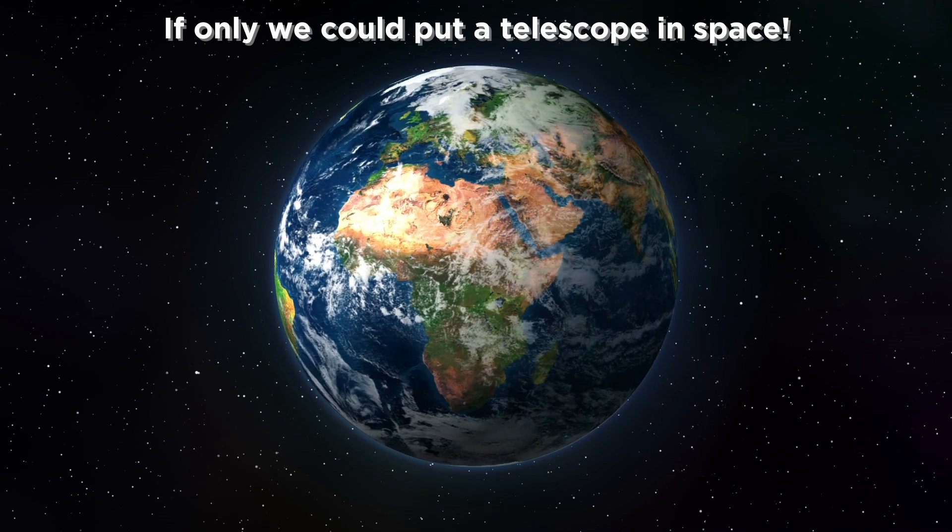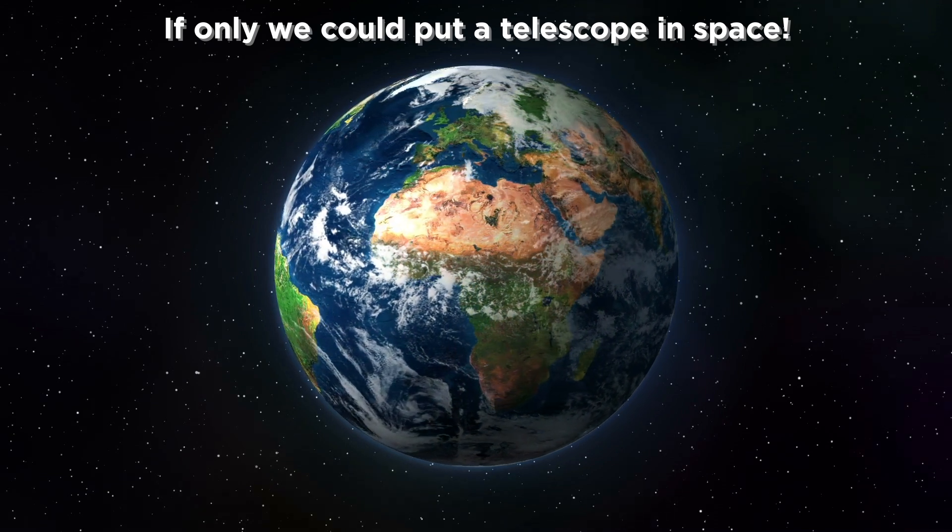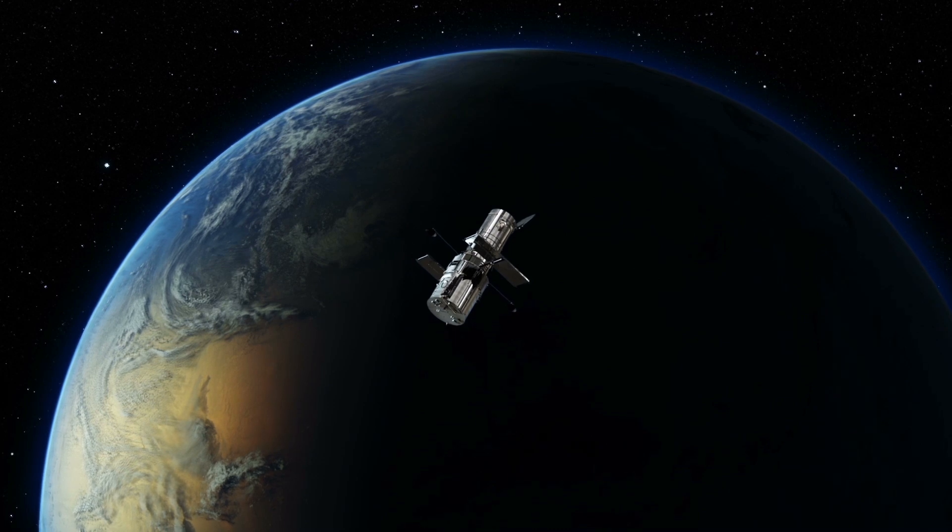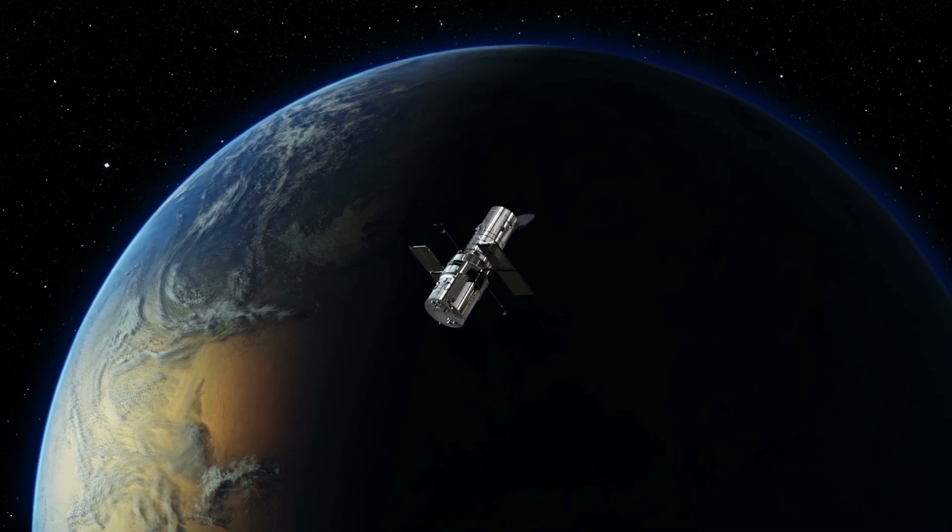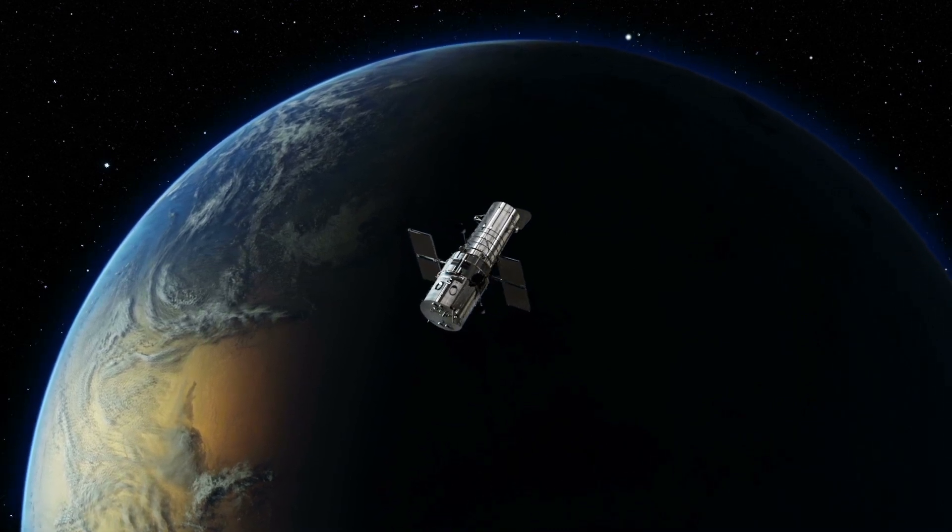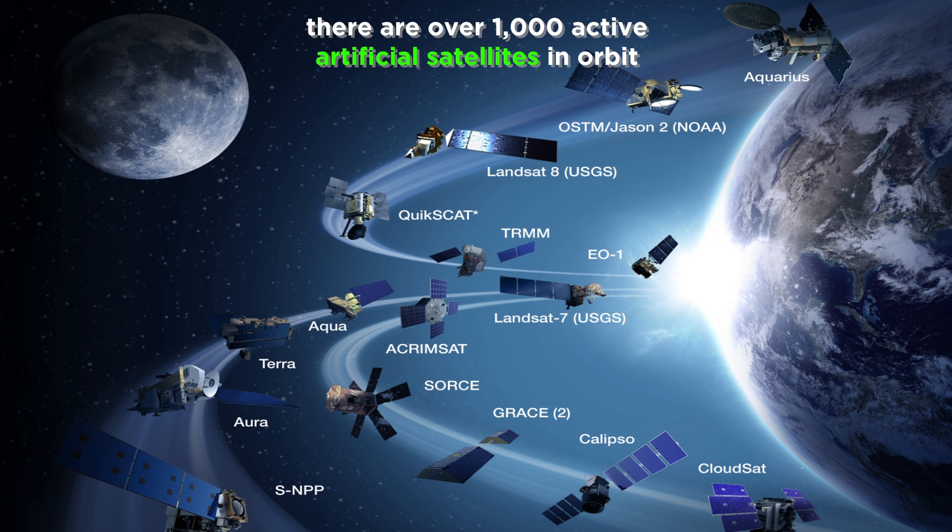If only we could put a telescope in space. Well, in fact, we eventually ended up doing exactly that, but that wasn't the first thing we put up into orbit. There are currently over a thousand active artificial satellites in orbit around the Earth. We say artificial to distinguish them from natural objects, like the moon, which is Earth's natural satellite.